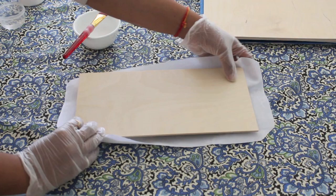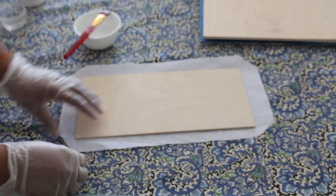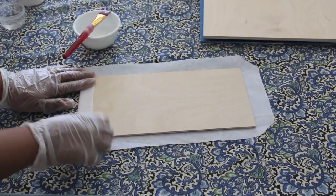You start by gluing the back of the board. Apply a thin layer of the glue mixture and stretch and press gently.